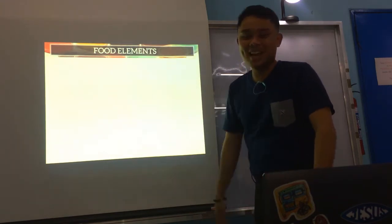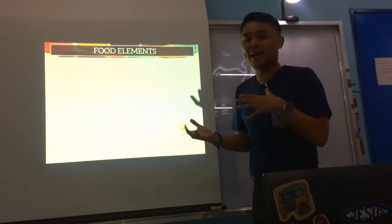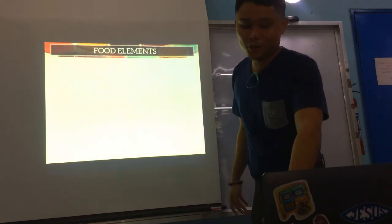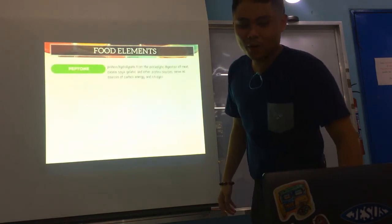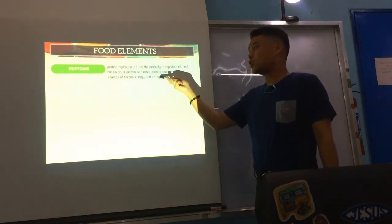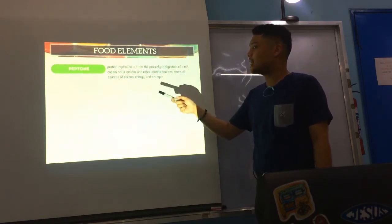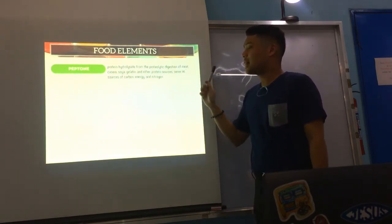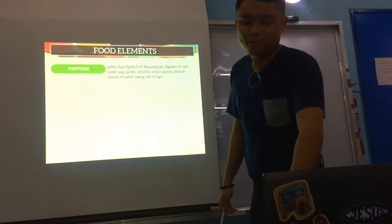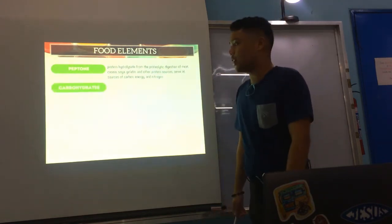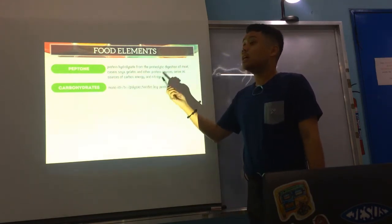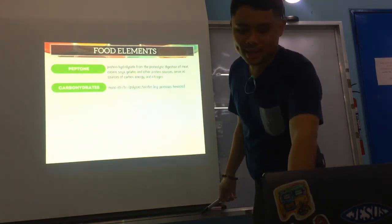We'll now go directly to food elements — the types of nutrients or food that bacteria need in order to grow. First is peptone, which is basically protein. It can be obtained from the digestion of meat, casein, soya, or gelatin. Peptone serves as a source of carbon, energy, and nitrogen. Next, you have carbohydrates, which are for energy. They may be in the form of monosaccharides, disaccharides, or polysaccharides.